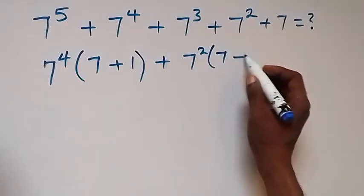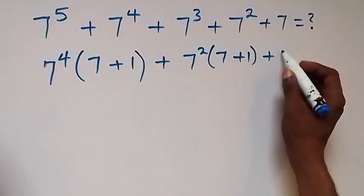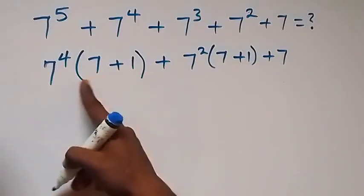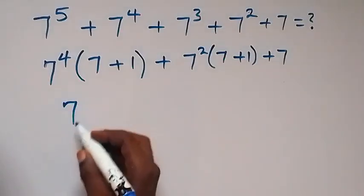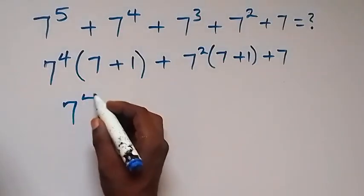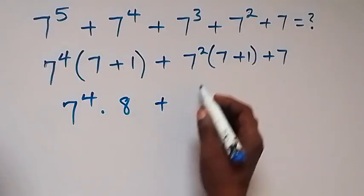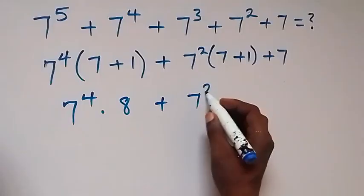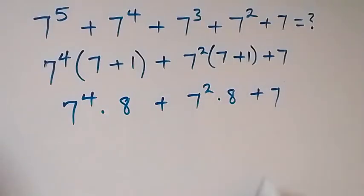Then plus 1 left here as well, then plus 7 from here. The next step: we can have 7 plus 1, that's 8. So we have 7 raised to power 4 times 8, then plus 7 squared times 8, then plus 7 from here.